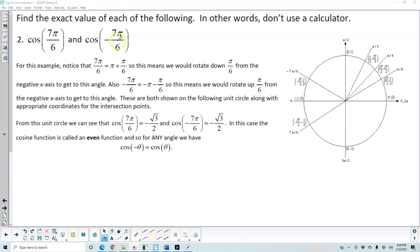We want to find the exact value of each of the following. In other words, don't use a calculator. We want to find the cosine of 7π over 6, and then we want to find the cosine of negative 7π over 6.